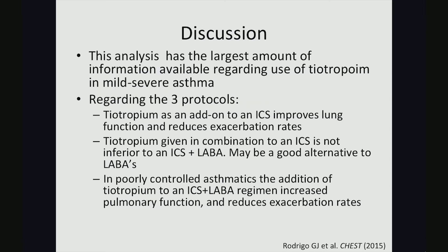Moving into the discussion, this analysis has the largest amount of information available regarding the use of tiotropium in mild to severe asthma, and the most patients included in a single study on the subject. Looking at the three protocols: tiotropium as an add-on to inhaled corticosteroid improves lung function and reduces exacerbation rates. Tiotropium given in combination with an inhaled corticosteroid is not inferior to inhaled corticosteroid plus long-acting beta agonist, making it a potentially good alternative. In poorly controlled asthmatics, the addition of tiotropium to inhaled corticosteroid plus long-acting beta agonist increased pulmonary function and reduced exacerbation rates.